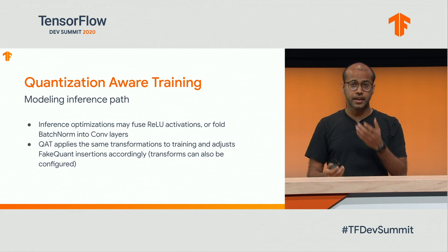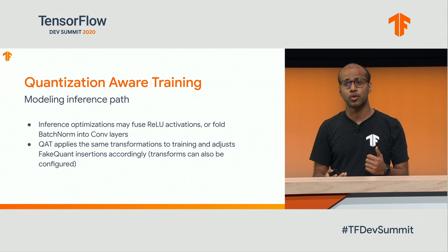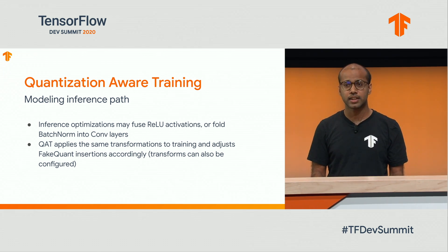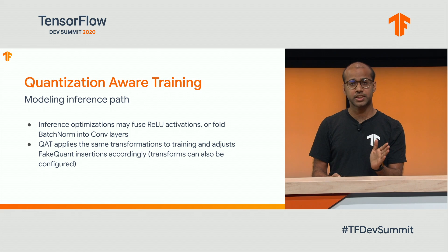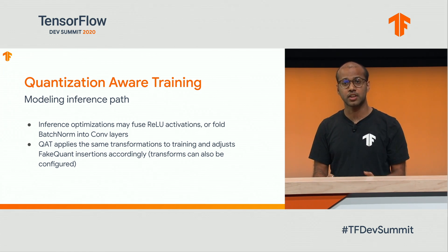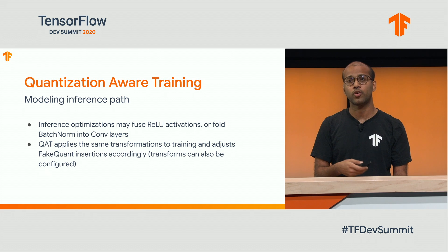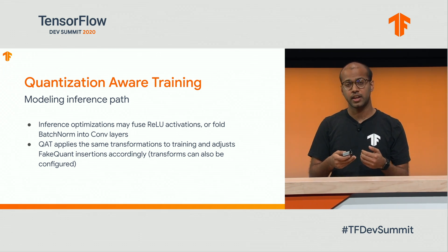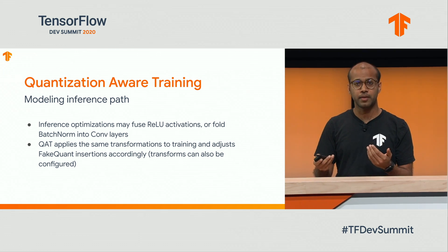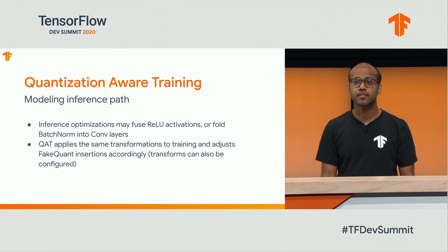We also model the inference graph. For example, in the previous slide, the fake quant operation came after the ReLU activation. This is one of the optimizations that happens during inference where the ReLU gets folded in. When constructing your graph, we make sure that these sorts of optimizations are included.